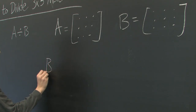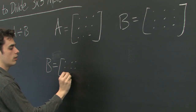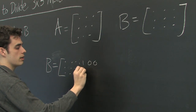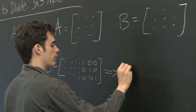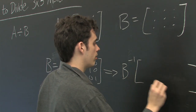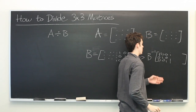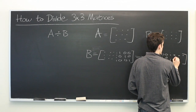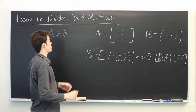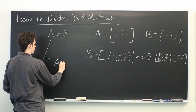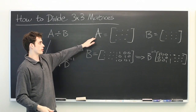So in order to do that, if we express B as an extended matrix with the identity matrix over here, we can get to the inverse by doing a series of row operations until the identity matrix appears on the left-hand side. And then whatever we have here is B inverse. So once that is determined, this simply becomes A times B inverse, which can be done in exactly the same way that one would go about multiplying A times B.